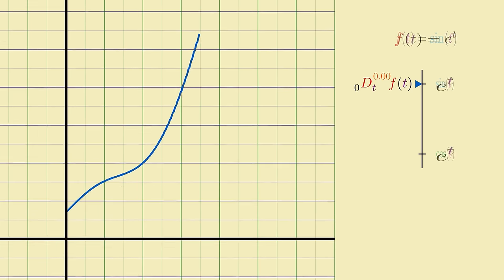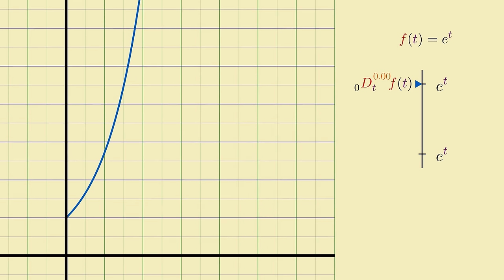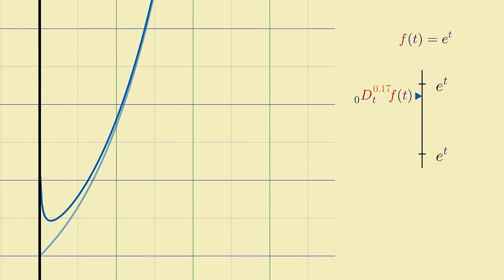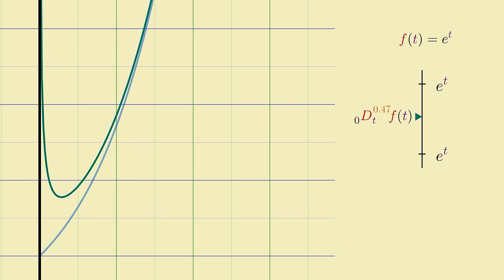Okay, but now let's see what happens to another function, like e to the t. What do you think its fractional derivatives look like? Well, since the ordinary full derivative of e to the t is just a copy of itself, a good guess is that taking fractional derivatives will also just leave the original unchanged. But that's not what we actually see. Weirdly, there are some genuine intermediate curves we pass through between e to the t and its first derivative, and they don't even look like exponential functions.